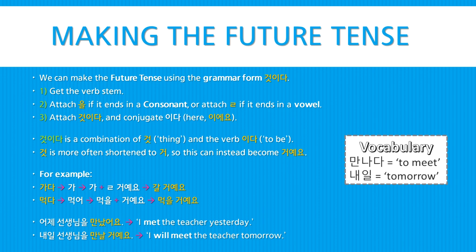Note that 거시다 is just from the words 겉 meaning 'thing' and 이다 meaning 'to be.' And since 겉 is more often shortened to just 거, this could instead become 거에요. For example, 가다 could become 갈 거예요, and 먹다 could become 먹을 거예요.